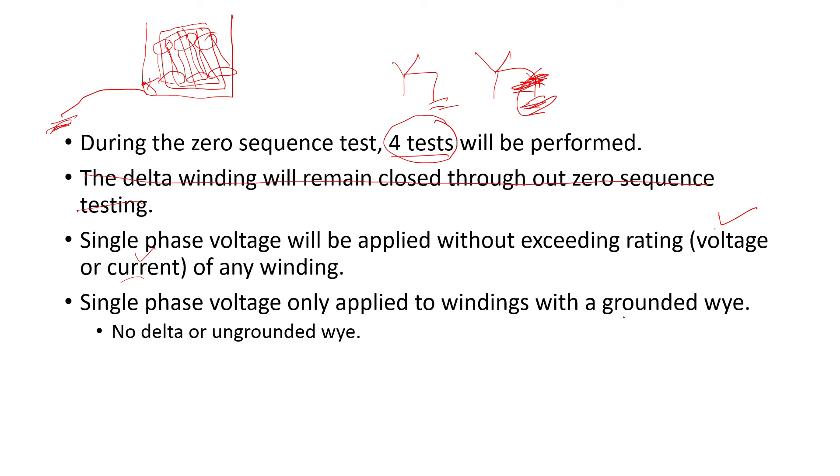Single phase voltage is only applied to windings with a grounded Y, so only if you have a grounded Y. If you have a delta, you cannot apply this single phase voltage to it. If it's ungrounded Y you can't. You have to have a neutral that's grounded and you have to have access to it.